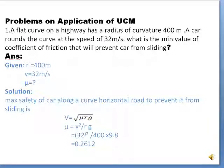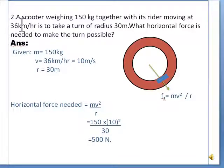Second question. Read the question. Scooter weighing 150 kg together with its rider moving at 36 km per hour is to take a turn of radius 30 meter. What horizontal force is needed to make the turn possible?